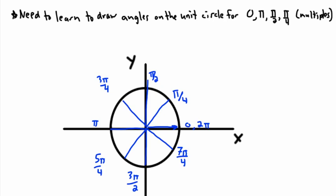I've just been looking at how to draw angles in radians — these multiples here. Going around a circle, we always go clockwise. We've been doing fractions of going all the way around. Remember, all the way around is two pi radians, therefore halfway around is pi. You can start thinking about half of that, or even a quarter of that, and so on. Let's do the harder ones.